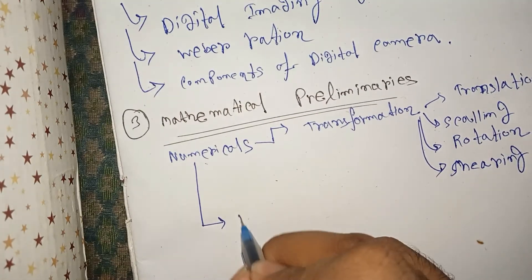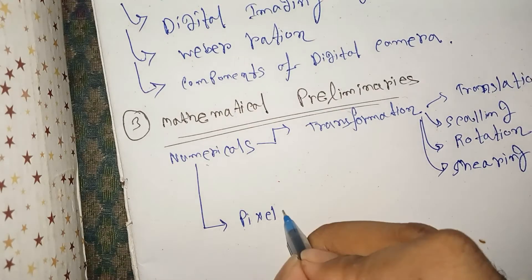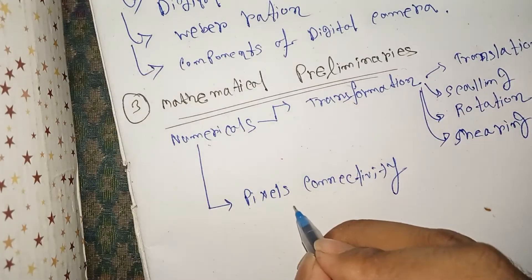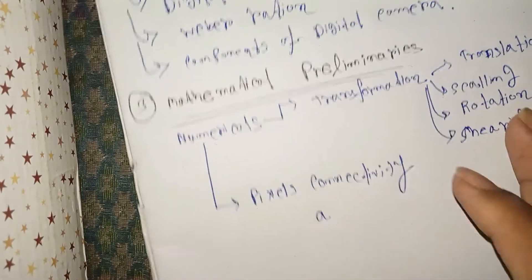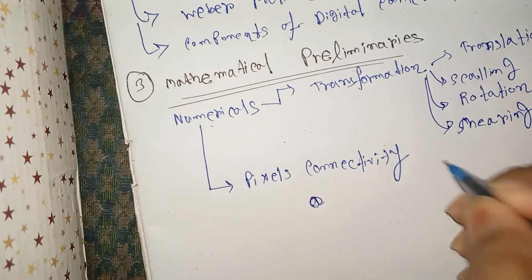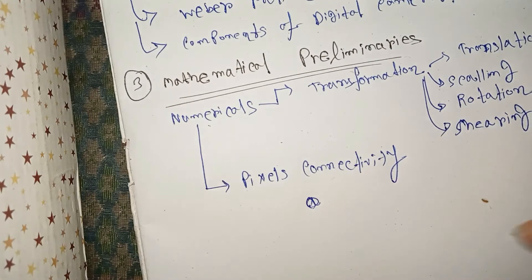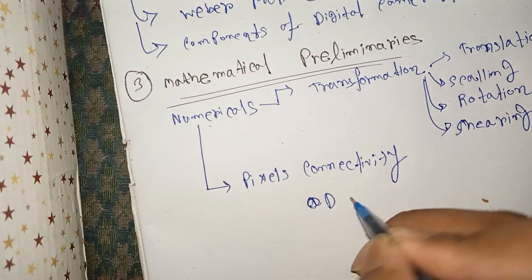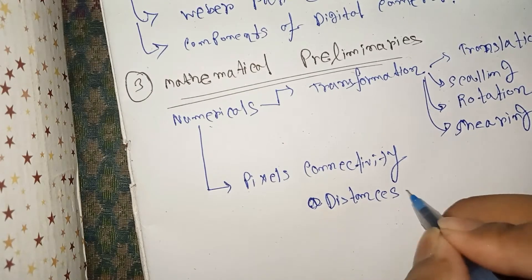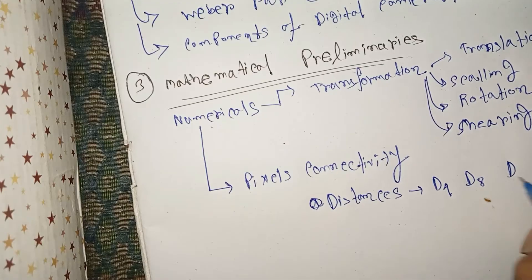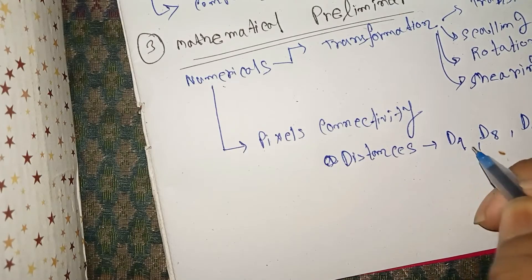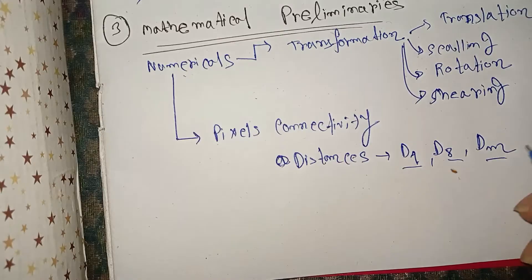Another important numerical topic is pixel connectivity. Various types of connectivity and distances or adjacency can be asked, such as D4, D8, and Dm distances. An image will be given and you will need to find the D4 distance, D8 distance, and Dm distances.